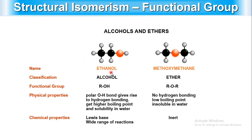Comparing alcohol (R-OH) and ether (R-O-R): the polar O-H bond in alcohol gives rise to hydrogen bonding, resulting in higher boiling point and solubility in water. Ether has no hydrogen bonding, so it has a lower boiling point and is insoluble in water. Chemically, alcohol acts as a Lewis base with a wide range of reactions, while ethers are relatively inert.